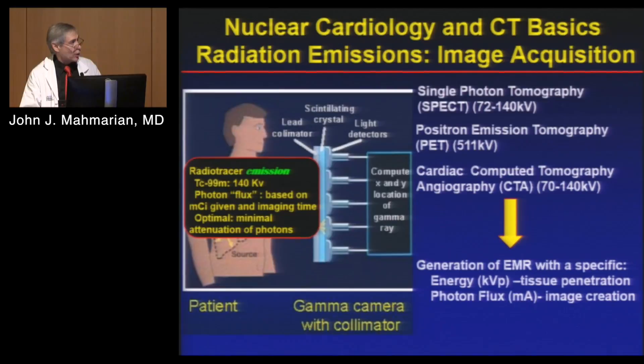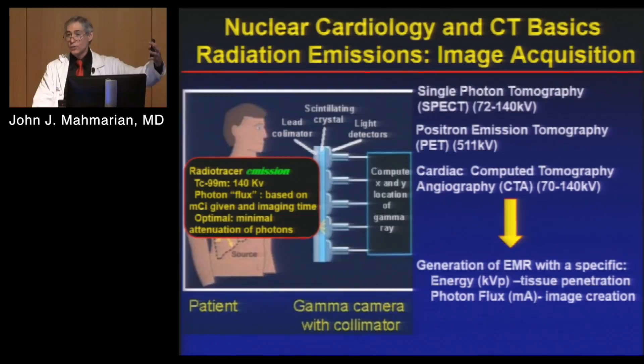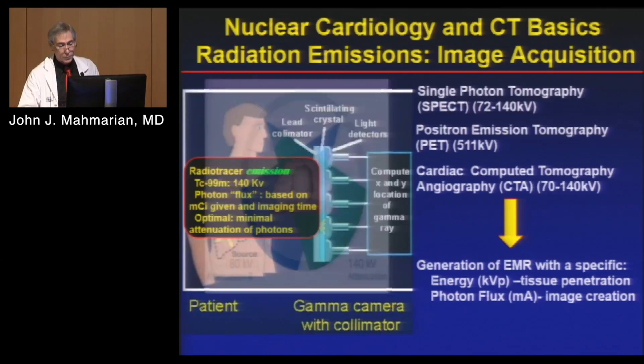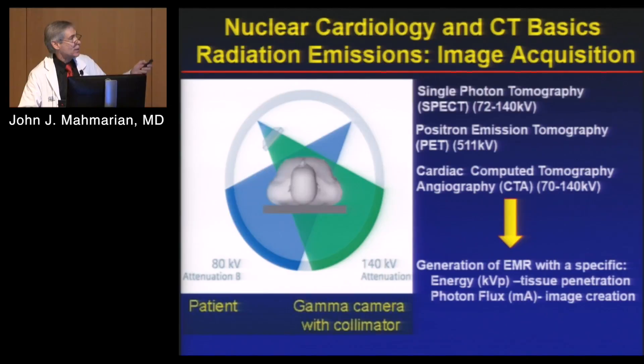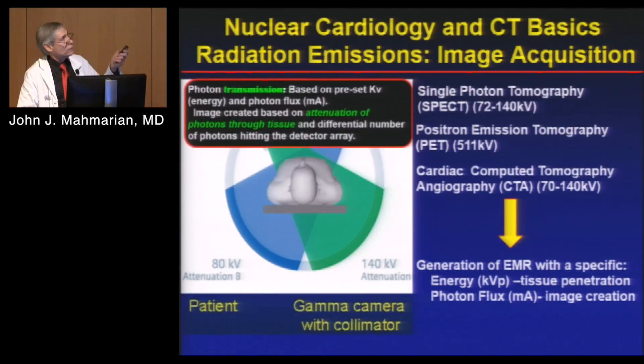Photon flux is based on the amount of millicuries we give and the imaging time we acquire the image — that determines our photon flux and creates our image. In nuclear imaging, we minimize attenuation of photons, because if we have attenuation they don't get outside the body to the camera. We do that by using high energy radio tracers. With CT, it's different — we're generating x-rays transmitted through the body across 180 degrees.